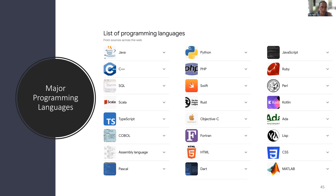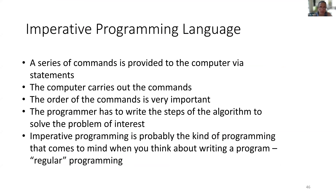There are many programming languages you could choose to learn — Java, Python, the various C languages, SQL for databases, Scala, COBOL, Fortran, Perl, Ruby, MATLAB, Pascal, and many more. Python is just one of them, and that brings us to another way we can divide programming languages.